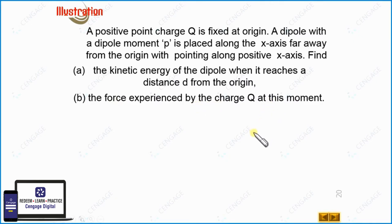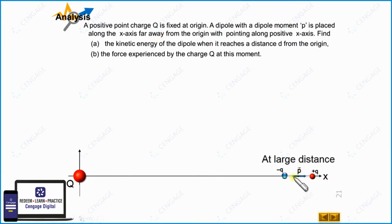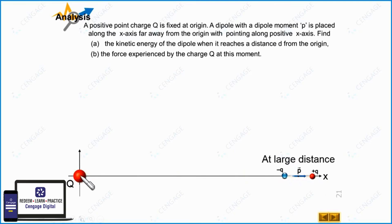Let us make a rough diagram of the situation. This is the charge particle placed at the origin and it is fixed. The dipole is placed at a large distance and the dipole moment vector is pointing in the positive x direction. We can observe that this dipole will attract toward the charge particle. We can verify it by finding the electric field due to the dipole at the position of the charge particle — that field will be in the rightward direction, and since this is a positive charge, it will attract toward the dipole.